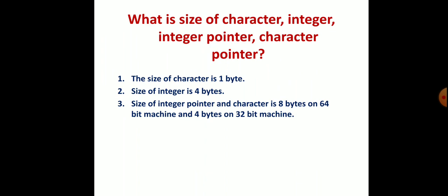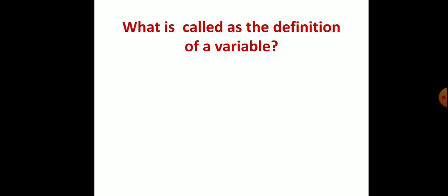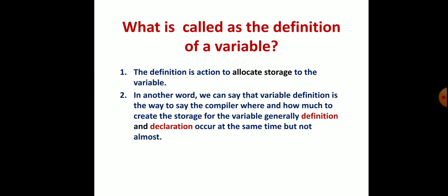What is called the definition of a variable? The definition of a variable is an action to allocate storage. The main functionality of the variable is to just hold some values. This is a basic concept that you may have learned in your school days. A variable holds a value, that is, it allocates some storage space.